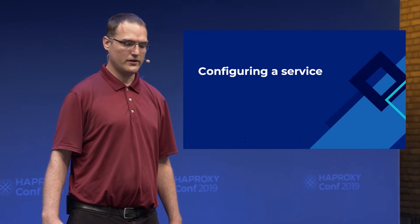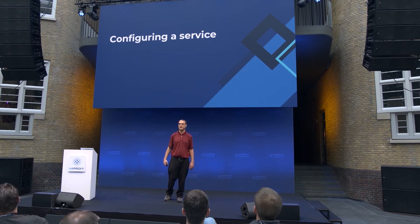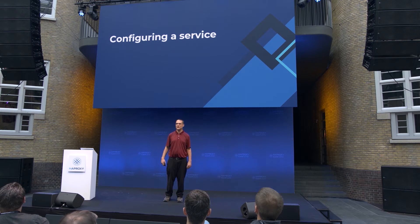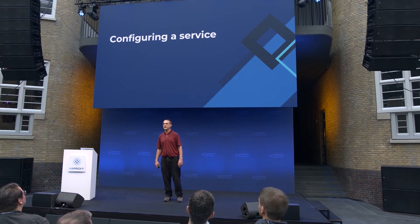Now we're going to go through a quick overview of exactly how to configure a service using the Data Plane API. A lot of this involves curl commands run on the command line to show how it actually works. Usually this will be done through some form of scripting, but if you just want to make one-off triggered changes — like adding rate limiting when Prometheus is detecting a high request rate — you can very easily write a shell script to make these calls.